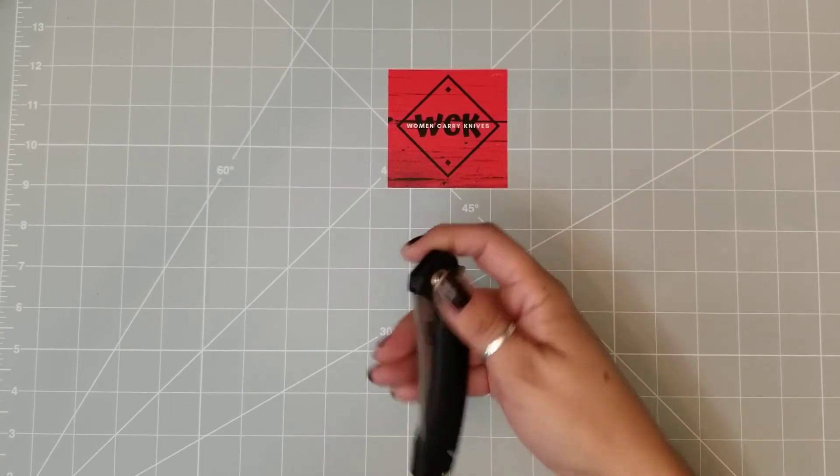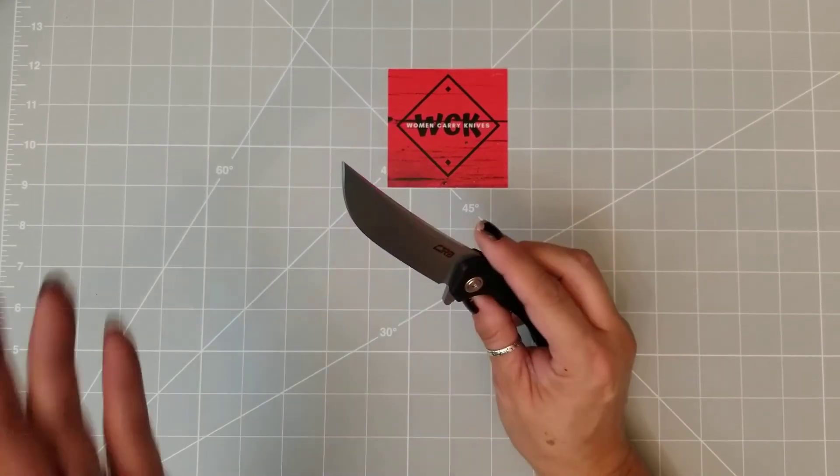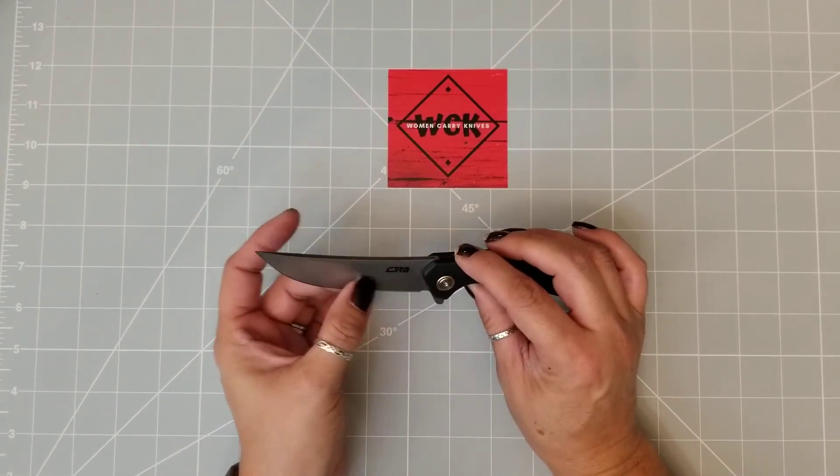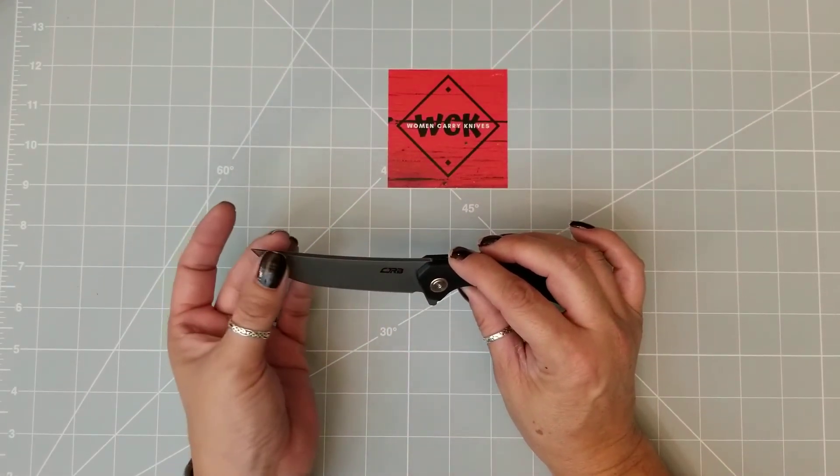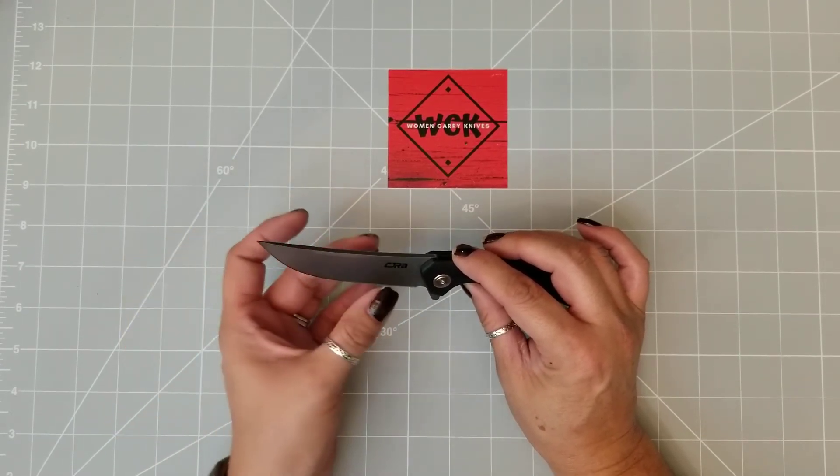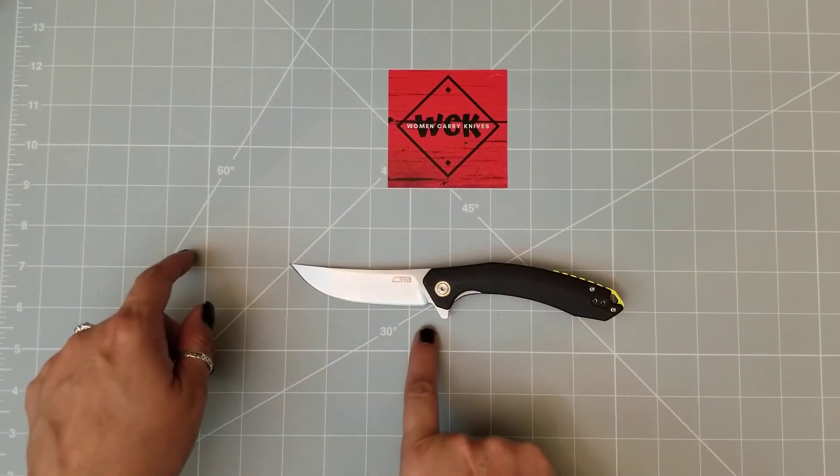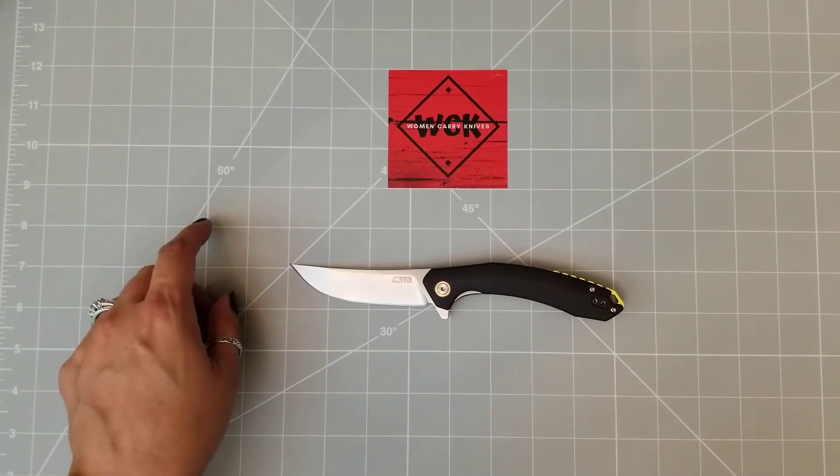So I used it to cut up some boxes and I'll tell you it just sliced right through them. And the nice part is your cutting edge on this, because of the length, because of the fact that it's all the way up on that curve, you're talking one, two, three and a half inches of cutting surface.